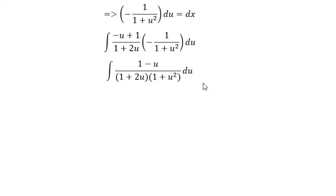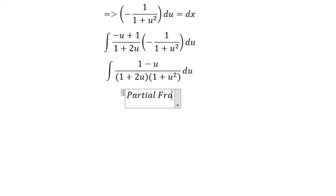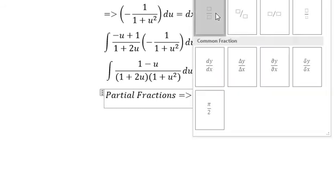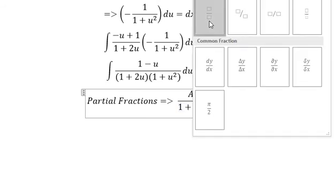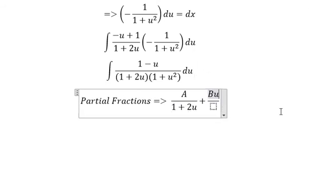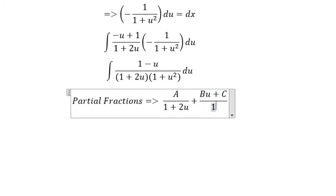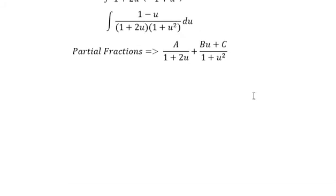Now we can use partial fractions. So we have capital A over 1 plus 2u, and we have Bu plus C over 1 plus u squared. Now we find a common denominator.